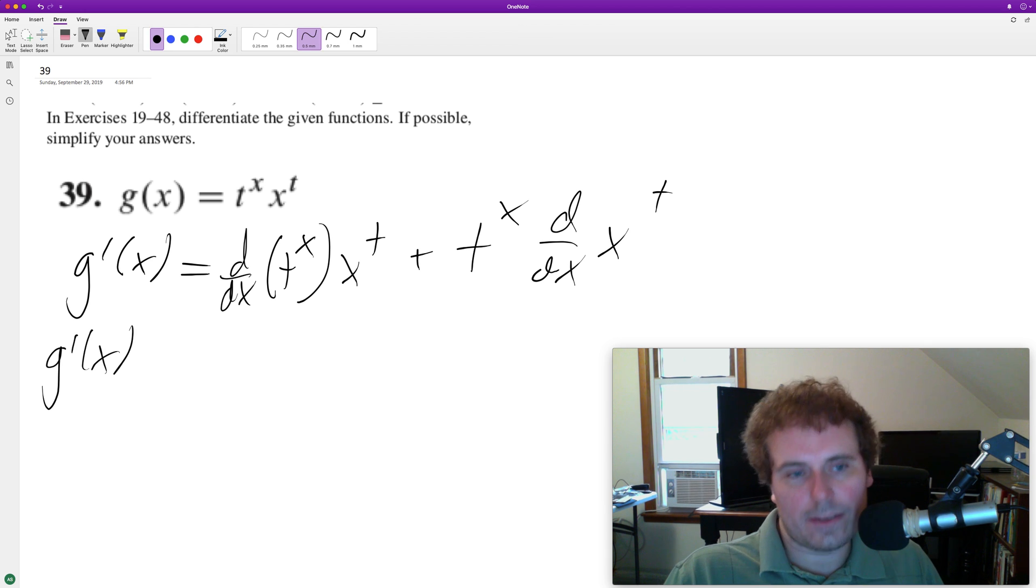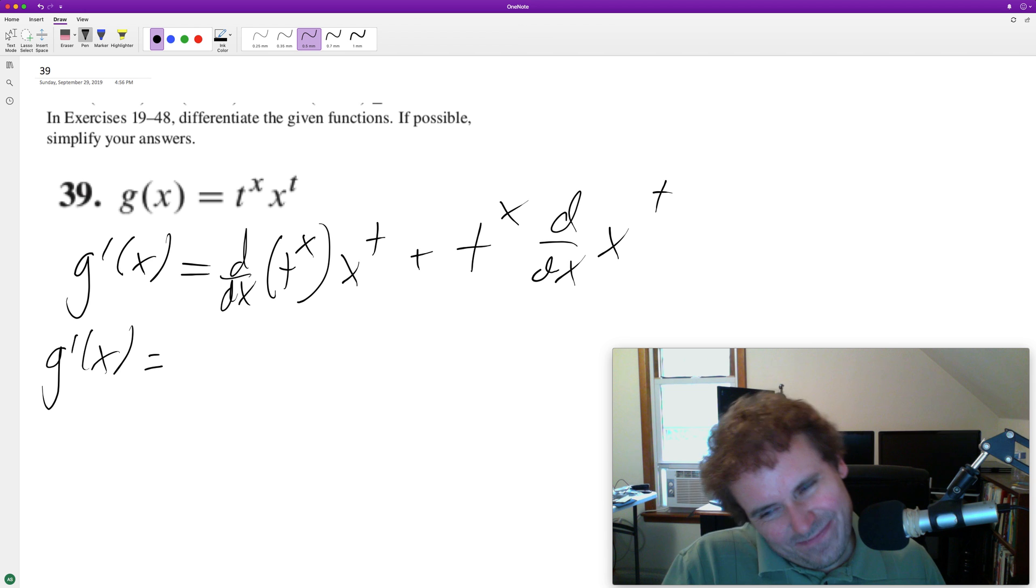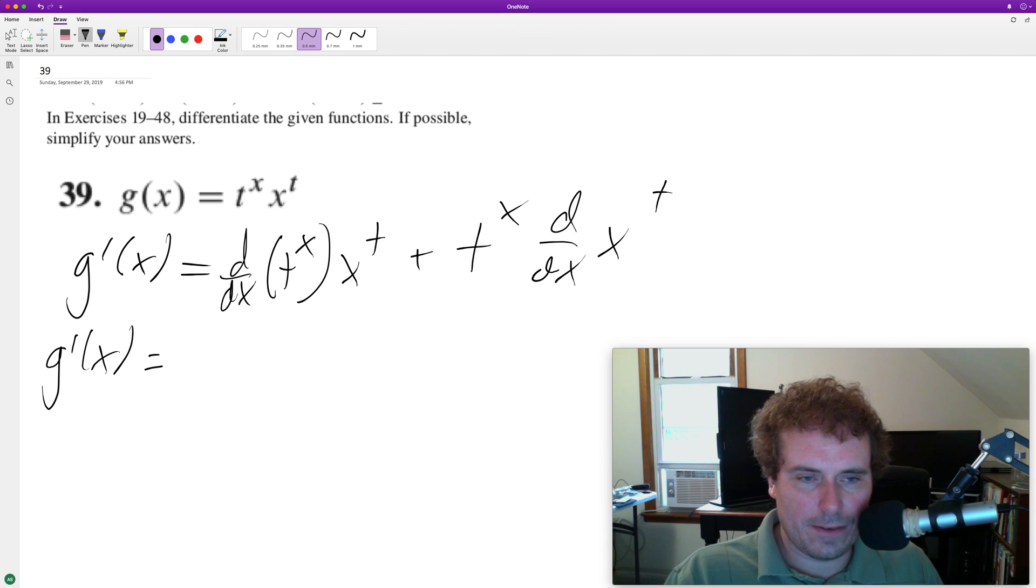So we get g prime of x. With respect to x, we pull that down. So it's going to be one times the natural log of t times t raised to the x times x raised to the t,